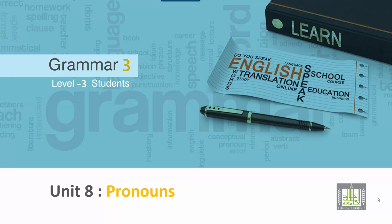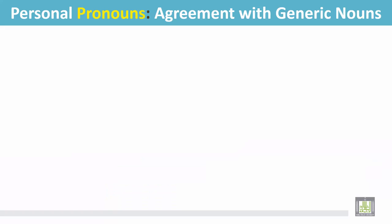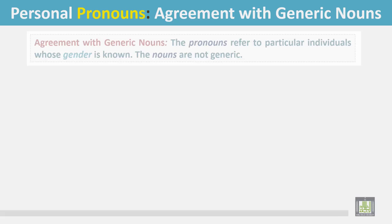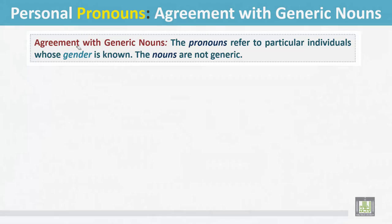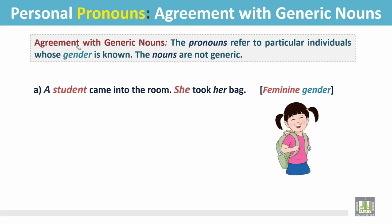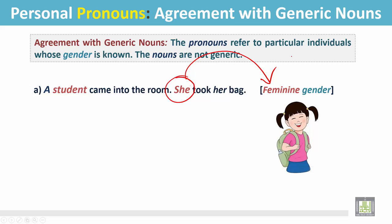Grammar 3 for Level 3 students, Unit 8: pronouns — personal pronouns agreement with generic nouns. The pronouns refer to particular individuals whose gender is known; the nouns are not generic. For example: 'A student came into the room. She took her bag.' In this sentence, the pronoun is referring to a feminine gender, but the noun 'student' is not generic.